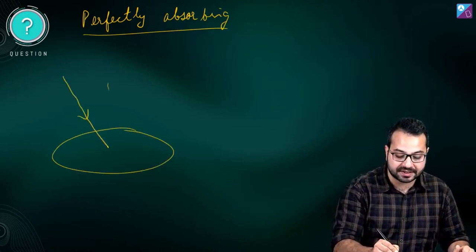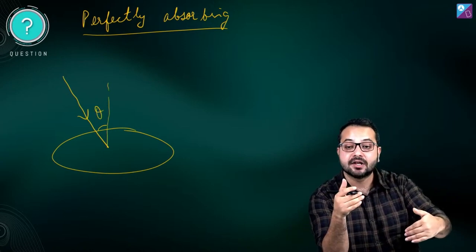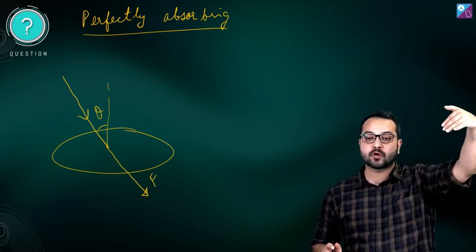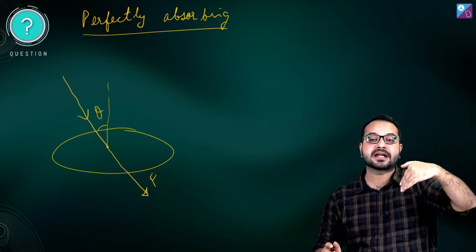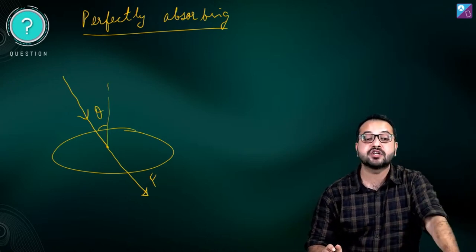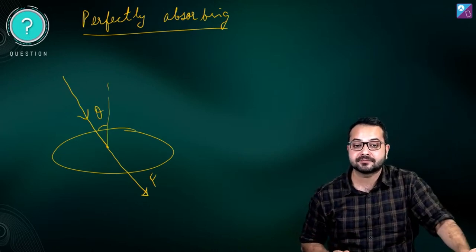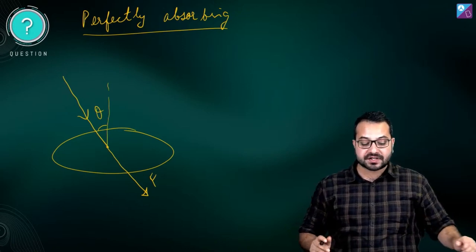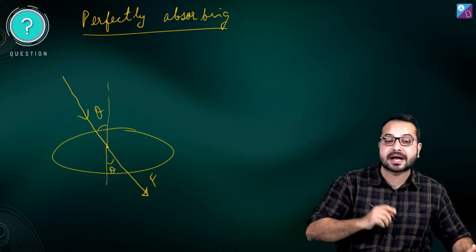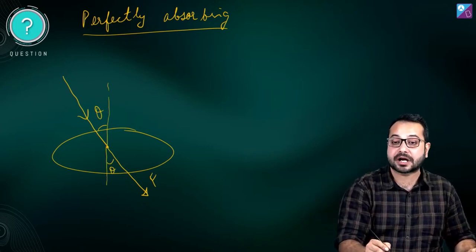For the perfectly absorbing case at an angle of incidence theta: the force is exerted in the direction of the incident light, because the light had momentum in that direction and after being absorbed its momentum became zero. The change in momentum — and hence the force — is along the direction of the incident light, so the force is at an angle to the surface.